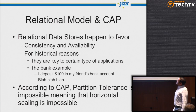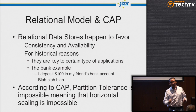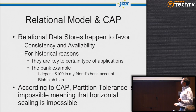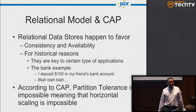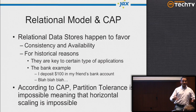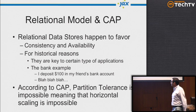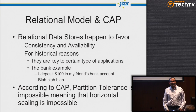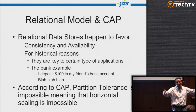The relational model favors Consistency and Availability — every time you query it's ready and gives you a 100% consistent answer. Historically, certain applications require that — like banks, the classic example of depositing money. But according to CAP, partition tolerance is then impossible, which means it's impossible to scale horizontally because partition tolerance means you have a distributed system.